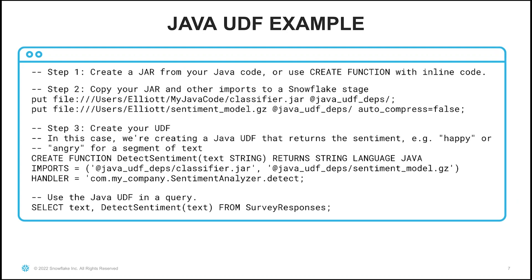We specify language Java to indicate we want to use Java for our UDF. Next we specify the imports — the files we copied to our stage — including the classifier jar that holds the Java code, as well as a sentiment model, which is a gzipped file containing the model. We specify the handler, which is the fully qualified name of the Java method: the package name com.mycompany, the class name SentimentAnalyzer, and detect, which is the method name. Once we've created our UDF, we can use it in a query — selecting text and calling detect_sentiment on it from a table named survey_responses.